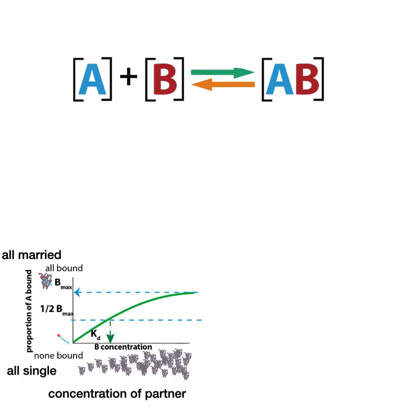At the top, we have all the A bound, so it'd be like all A is married. At the bottom, all of A is single. At the bottom left corner, if you have no B, then all of the A is single. At the top, if you have an excess of B, all of the A is going to be bound. So you reach this plateau. But at the point where you have half of A bound, the concentration of B that gets you half of A bound is called the KD.